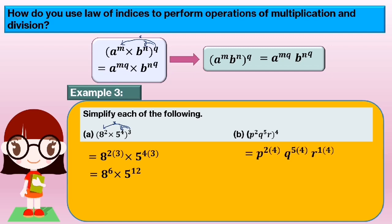For Part B of Example 3, we do the same thing — multiply the index outside into the bracket. So for p to the power of 2, q to the power of 5, r to the power of 1, all bracket to the power of 4: we get p to the power of 2 times 4, q to the power of 5 times 4, r to the power of 1 times 4, which equals p to the power of 8, q to the power of 20, r to the power of 4.